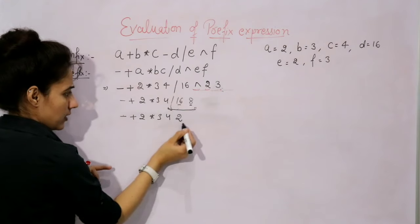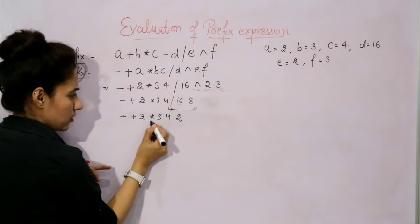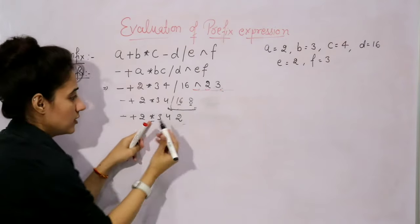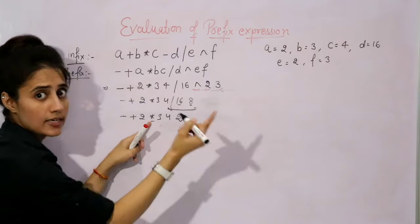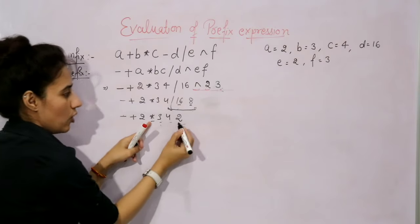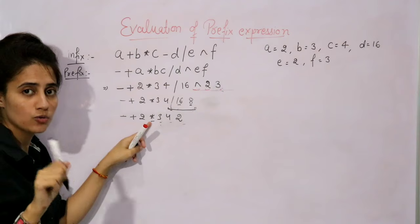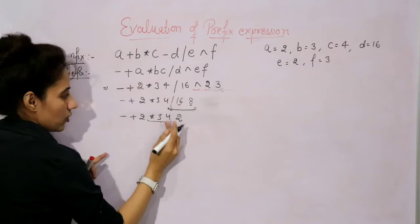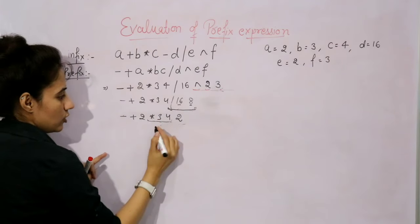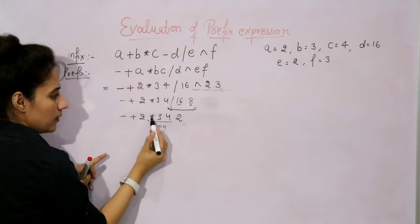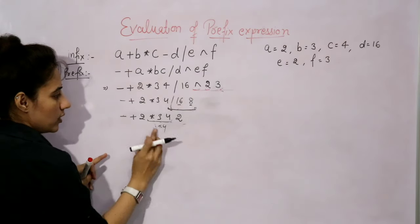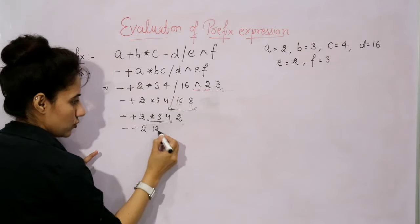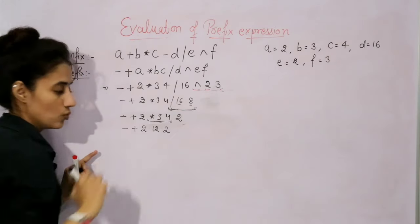In another scan, you find from right to left that the first operator is the multiplication sign. For this operator, the operands are the immediate next two — this one and this one. We will not consider the others. This prefix sub-expression is: asterisk, three, four — which means three into four, that is twelve. So here you write 12, and now the expression becomes: 2, 12, 2.